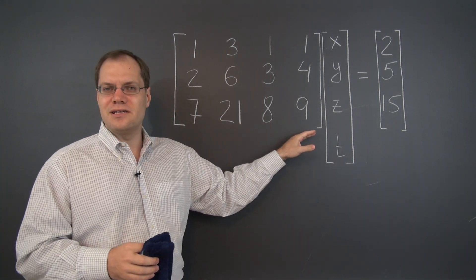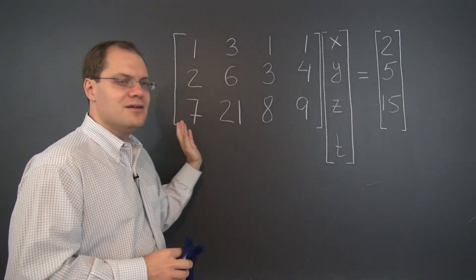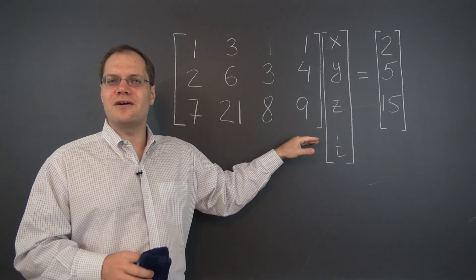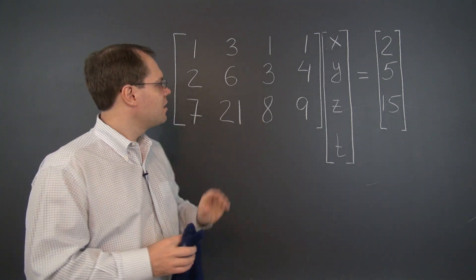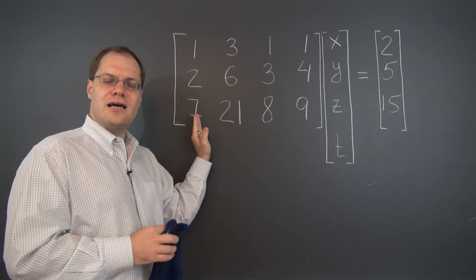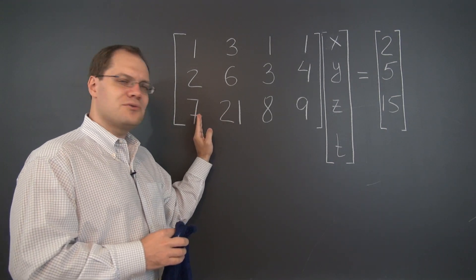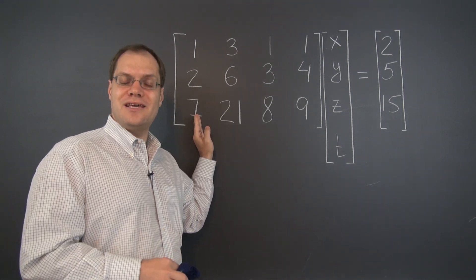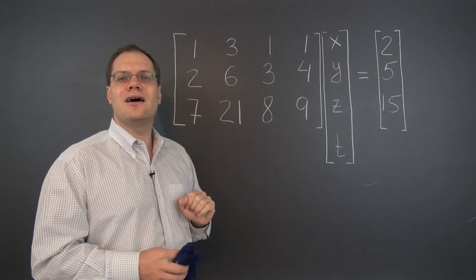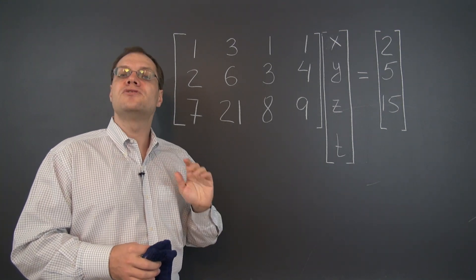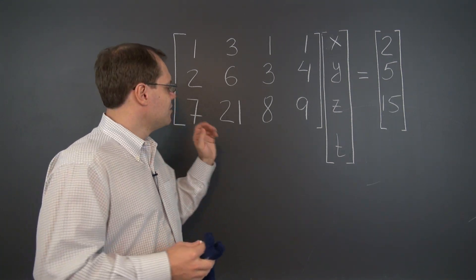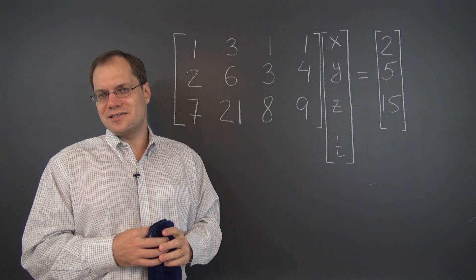Here's an interesting example of a linear system. We won't necessarily proceed all the way to finding the general solution, but we'll take it far enough to see what's going on. You will notice that the second column is three times the first column — it is already a linear combination of the columns that came before it. Let's see what implication that will have on the Gauss elimination of this linear system.